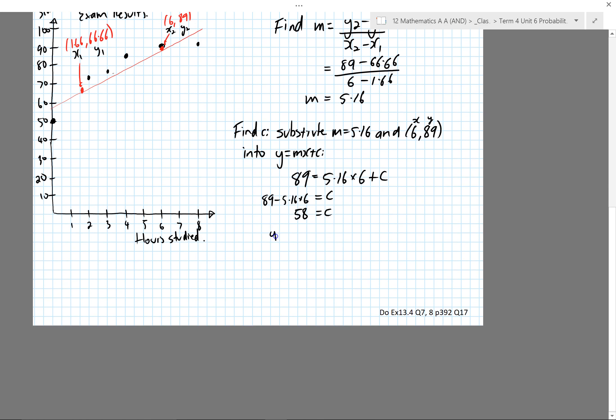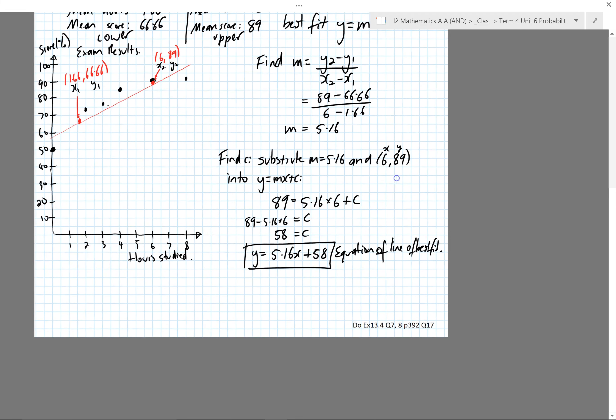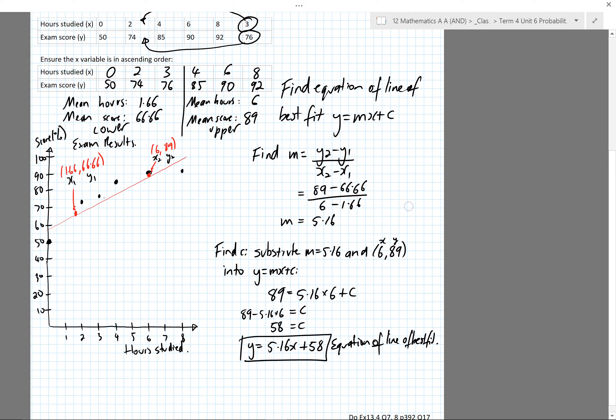So that means my equation y equals mx plus c is 5.16x plus 58. That is the equation of the line of best fit. What you've realized here is we actually didn't need to graph it at all. It's good to graph it to check our answer is reasonable, but we could have just found the mean of the lower and upper and done this working.